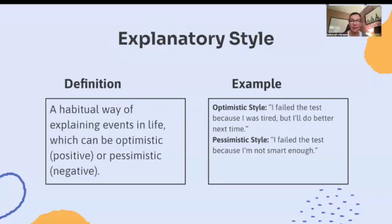Explanatory style is a habitual way of explaining events in life, which can be optimistic, positive, or pessimistic, negative. Optimistic style: I failed the test because I was tired, but I'll do better next time. Pessimistic style: I failed the test because I'm just not smart enough. That's your two differences.